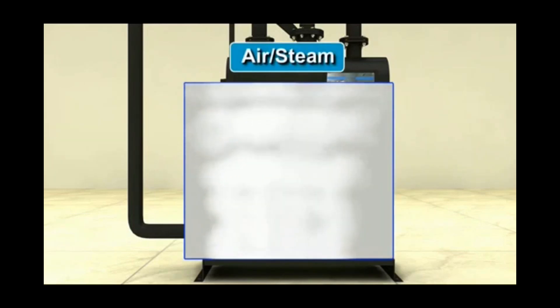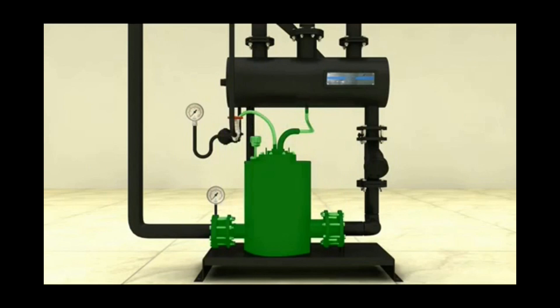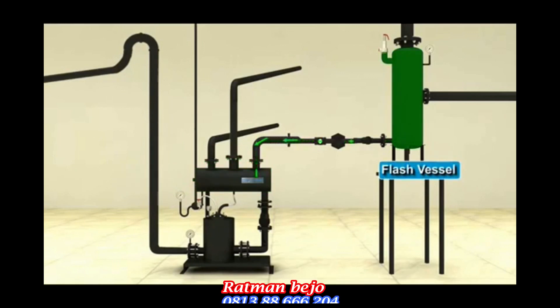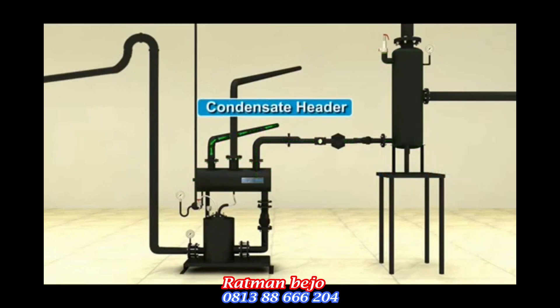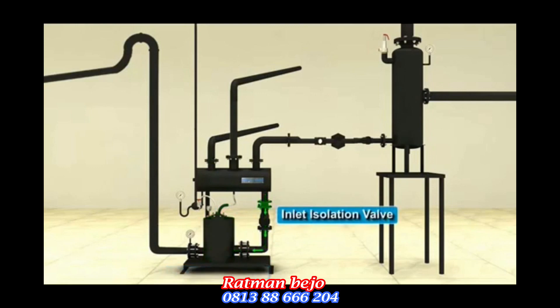The steam or air is used as motive media to operate the pump. Condensate comes into the pump receiver from flash vessel or plant condensate header and is allowed to flow into the pump body having float mechanism by opening the inlet isolation valve.